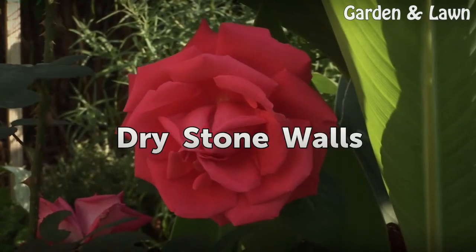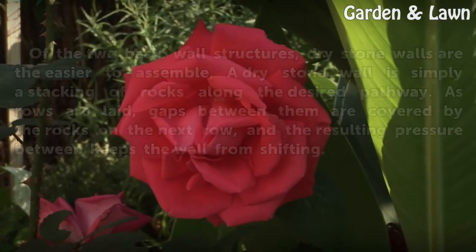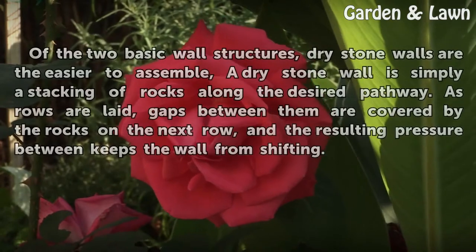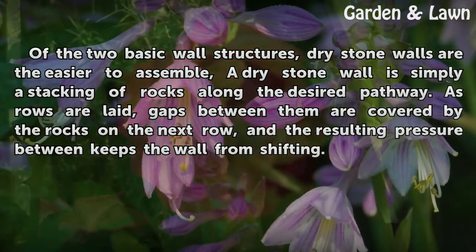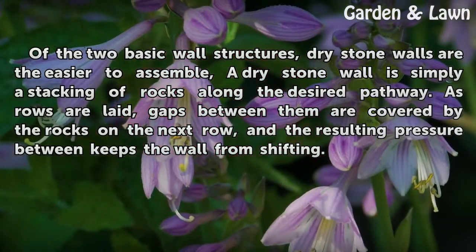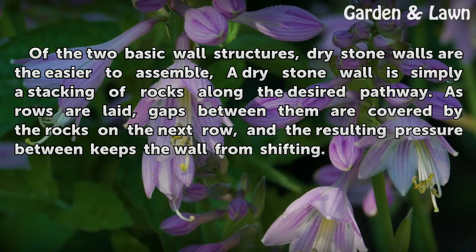Dry Stone Walls. Of the two basic wall structures, dry stone walls are the easier to assemble. A dry stone wall is simply a stacking of rocks along the desired pathway. As rows are laid, gaps between them are covered by the rocks on the next row, and the resulting pressure between keeps the wall from shifting.